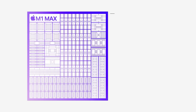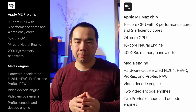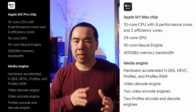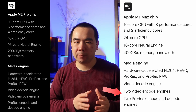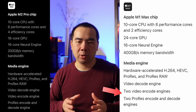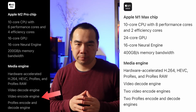Apple calls its hardware-accelerated video encoding and decoding support the media engine. Both the M2 Pro and M1 Max have media engines, but the Max-level chips have two video encode engines compared to just one on the M2 Pro. That makes a difference only if you plan to be encoding multiple streams of video at the same time.